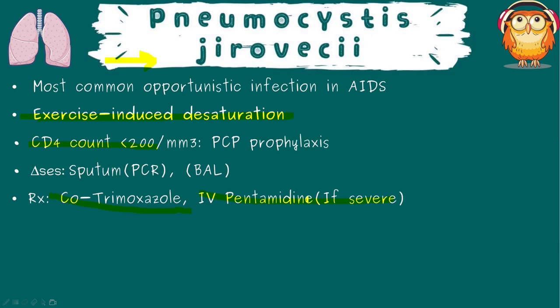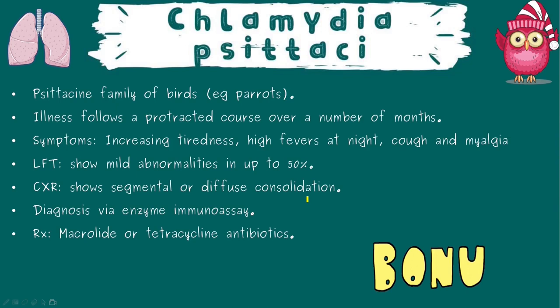By the way — is Pneumocystis jirovecii a fungus or a protozoan? Type in the comment box below. As a bonus topic: Chlamydia psittaci occurs in middle-aged people who keep parrots as pets. It is a fairly low-mortality illness but quite popular in exams. Watch out for such hints not only in MCQs but also on the wards — after all, our patients are our best teachers.